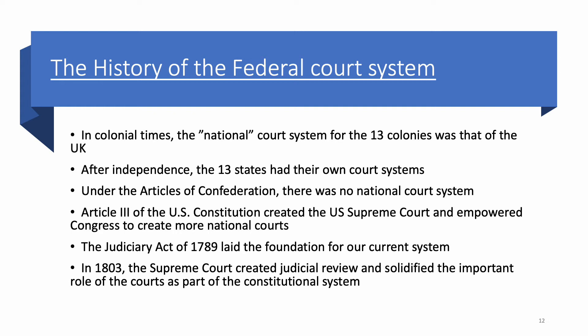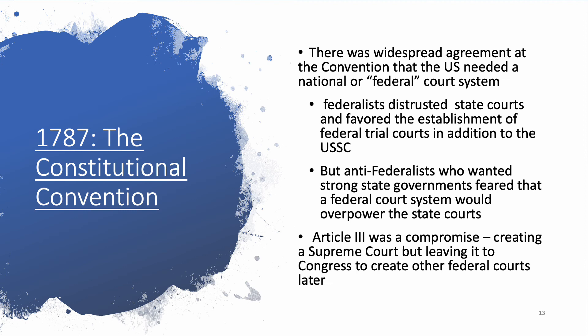Article III of the U.S. Constitution created the U.S. Supreme Court and empowered Congress to create as many more national courts as they felt were necessary. Congress immediately got to work — as soon as they convened in January 1789, they began creating federal courts. The Judiciary Act of 1789 was the foundation for our current system. Then in 1803, the Supreme Court created the Doctrine of Judicial Review, making the courts a very important part of our constitutional system because they could declare acts of Congress or the President unconstitutional.